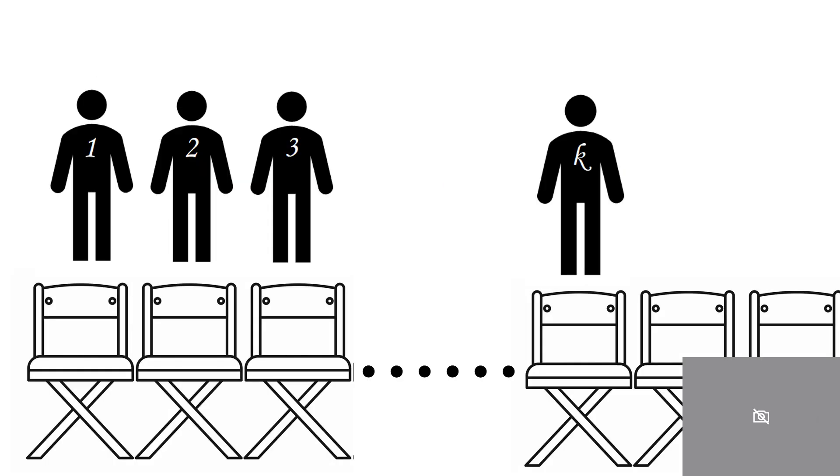So can I now prove that person k plus one will sit in chair k plus one? Well as you can see he has to because he will not sit in any seats greater than k plus one but all the seats in positions less than k plus one have already been occupied. So the only seat left for him to choose is seat k plus one.